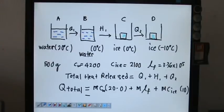The mass is 0.5. You can factorize it because all of them have the same mass. And water is 4200 times 20, that's the first one.